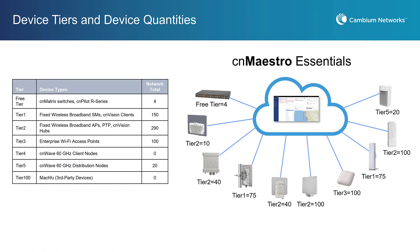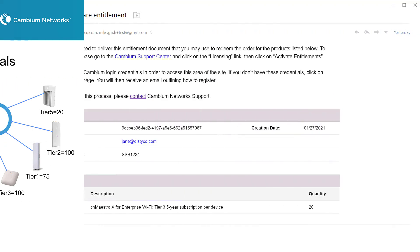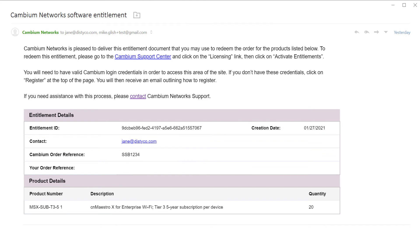When you have determined your subscription requirements, provide the counts to your reseller or distributor for a price quote. A distributor will place the final order with Cambium. The distributor will forward the entitlement email to you directly or via your reseller.